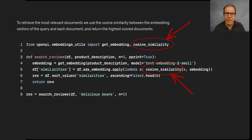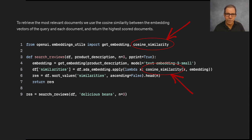You can see here that OpenAI is using cosine similarity for that, which makes sense because it's the most common method. It's very effective and efficient. Cosine similarity scores range between 0 for no similarity and 1 for an exact match. So what's the impact of these new embeddings on model performance?